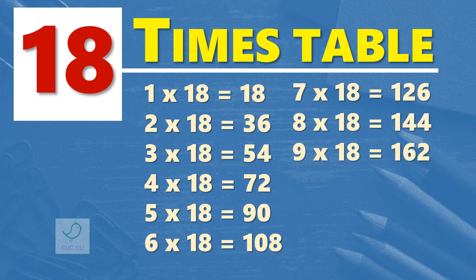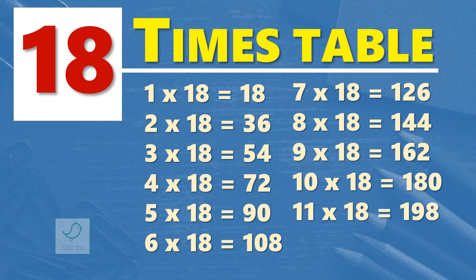Nine times 18 are 162. Ten times 18 are 180. Eleven times 18 are 198. Twelve times 18 are 216.